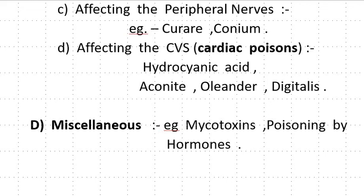Fourth, affecting the CVS — Cardiac Poisons: Hydrocyanic Acid, Aconite, Oleander and Digitalis. They affect the cardiovascular system. Miscellaneous Poisons include Mycotoxin and Poisoning by Hormones.